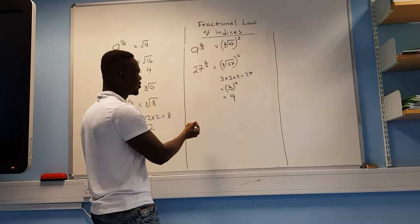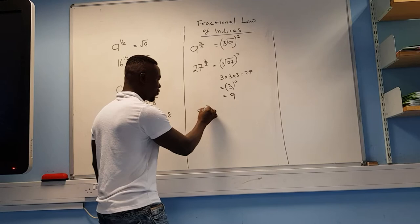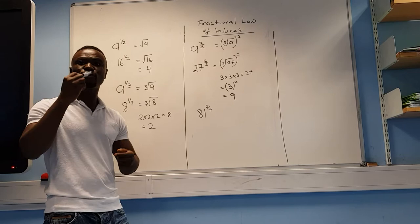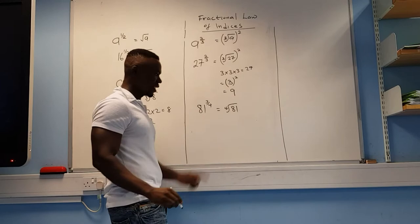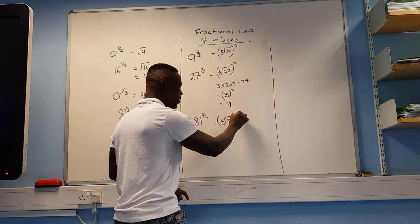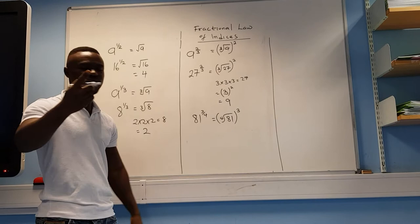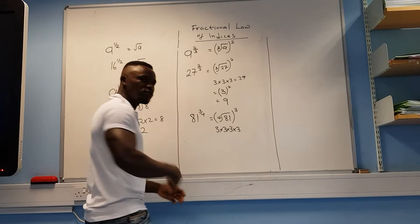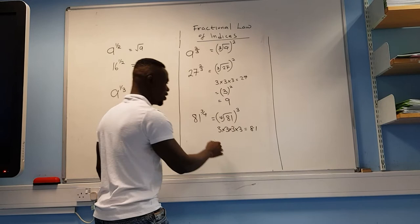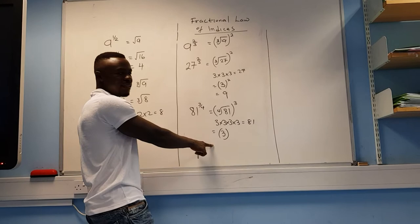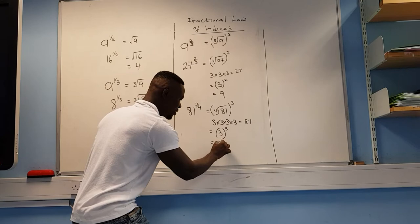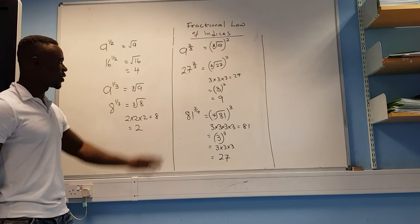Let's try 81 to the power of 3 over 4. The denominator is 4, so we take the fourth root of 81. Then the numerator says cube the result. On the times table: 3 times 3 is 9, times 3 is 27, times 3 is 81. So the fourth root of 81 is 3. Then 3 cubed equals 3 times 3 times 3, which is 27. The answer is 27.